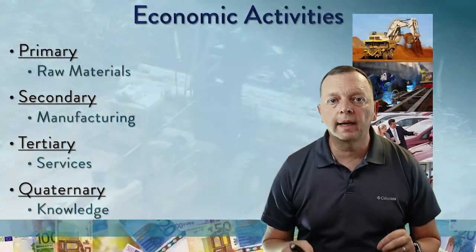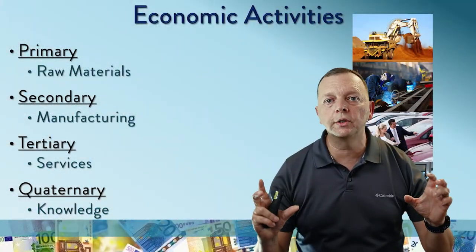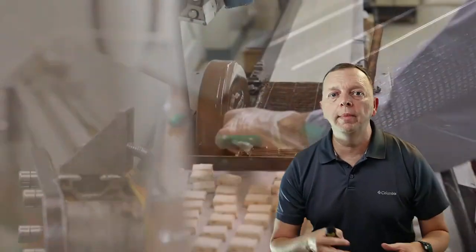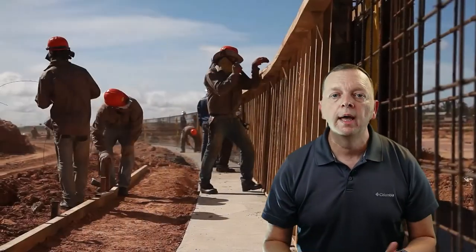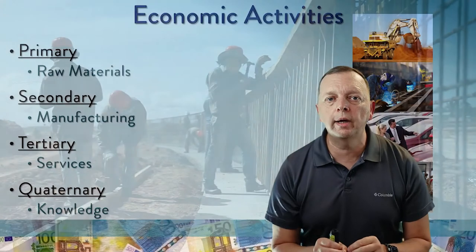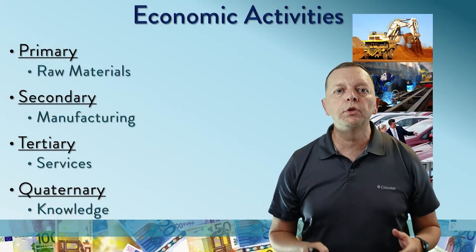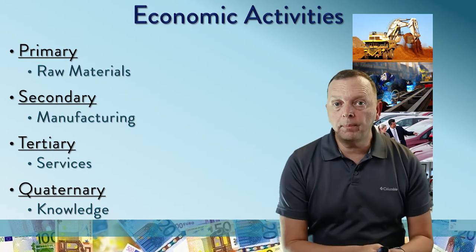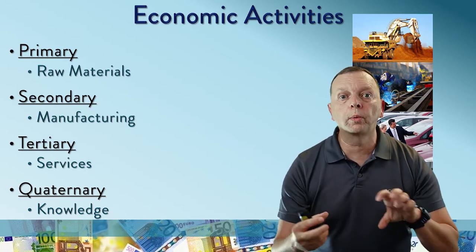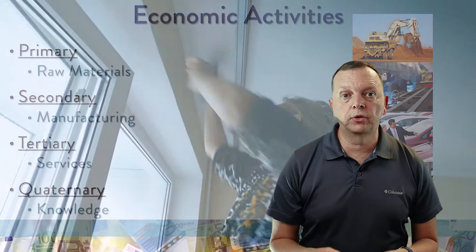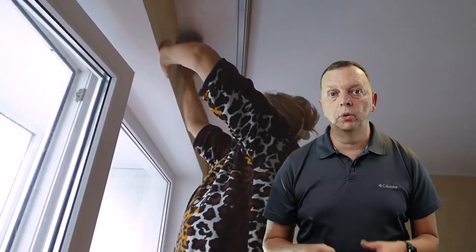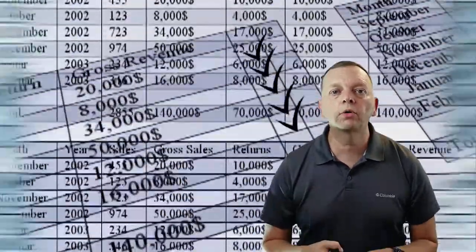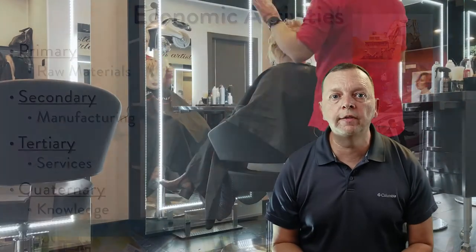Secondary economic activities is when we start taking those raw materials and we start making things, whether it is building homes, or making cars, or making cell phones. Now, tertiary economic activities is when we're doing services — those activities where we are not developing raw materials or building things. Examples include people who clean houses, who sell cars, who do business. These are all tertiary economic activities.